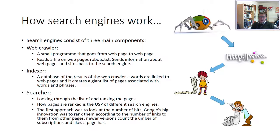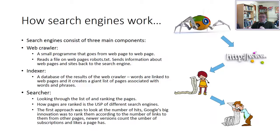Search engines consist of three main components: a web crawler, an indexer, and a searcher. A web crawler is a small program that goes out from the search engine's computer and crawls around the internet, copying itself from one computer to another and looking at web pages. It reads a file on the web page called the robots file — these little web crawlers are called robots, self-propelled pieces of software that climb around the internet. The web crawler looks at the information in the robots text file and sends information about web pages and sites back to the search engine.